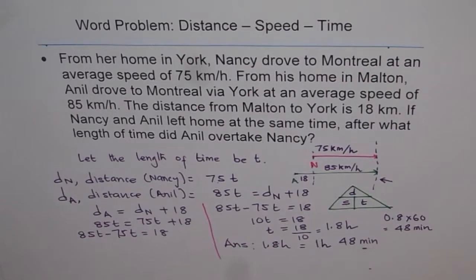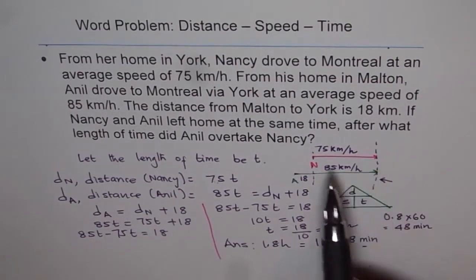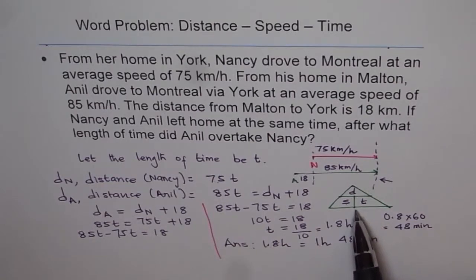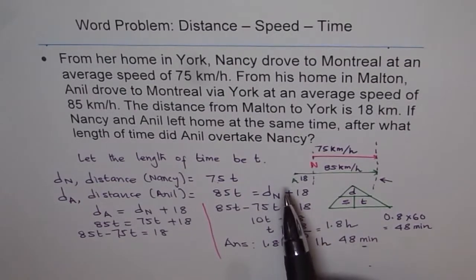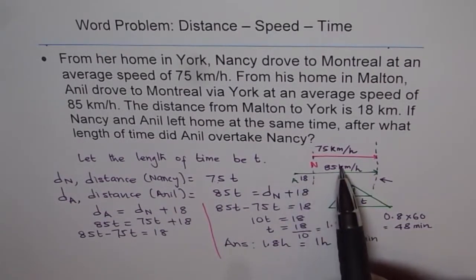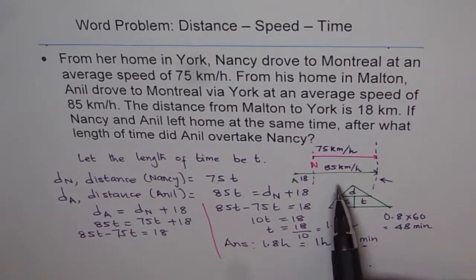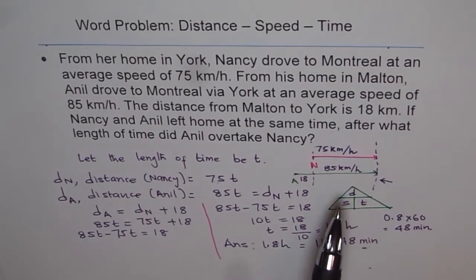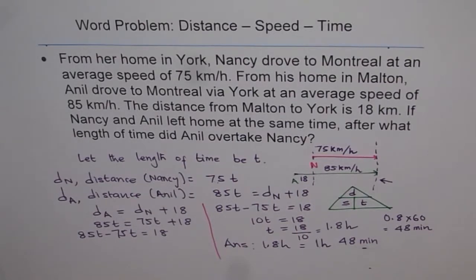I hope you understand how we did it. The first part of the problem is to sketch the situation and understand it. Then use the relation between distance, speed, and time to form your equation. What helps make the equation is that both travel for the same duration since they started at the same time, but their distances differ by 18 km. We equated the two distances and solved for time. Remember to write down the answer clearly with units — that's most important in any word problem. Thank you.